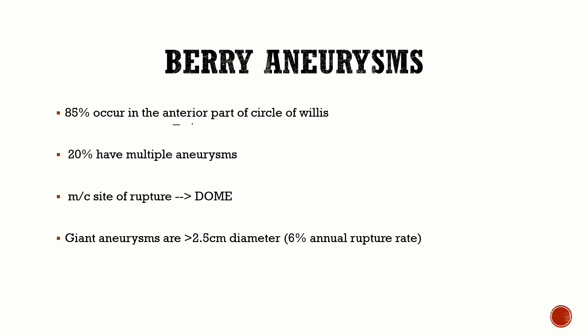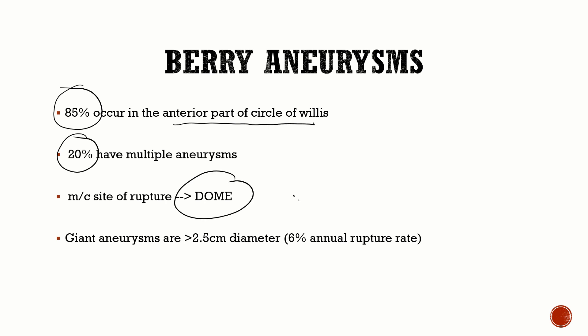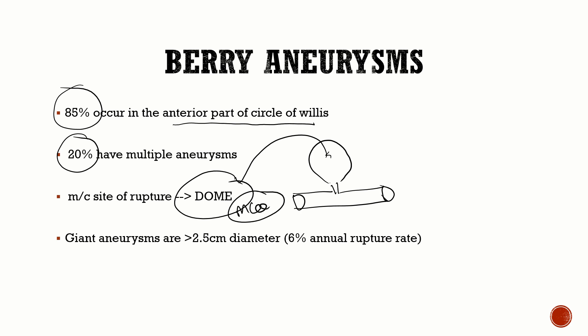Berry aneurysms most commonly occur in the anterior part of the circle of Willis — 85 to 90% are present in the anterior part, and 20% of them are going to be multiple. The most common site of rupture is the dome. When you have an aneurysm, you have the neck and the dome, and the most common site of rupture is the dome — a very important MCQ question.